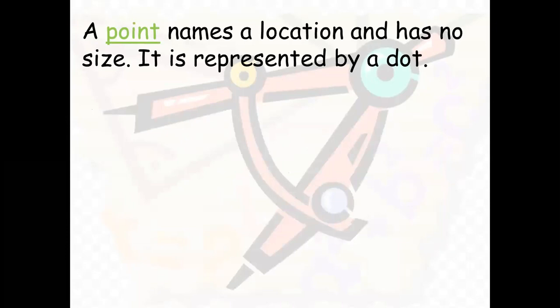The first one is a point. A point names a location and has no size. It is precisely a place — a location. It is represented by a dot. It can be big or small; it doesn't need to be a specific size.